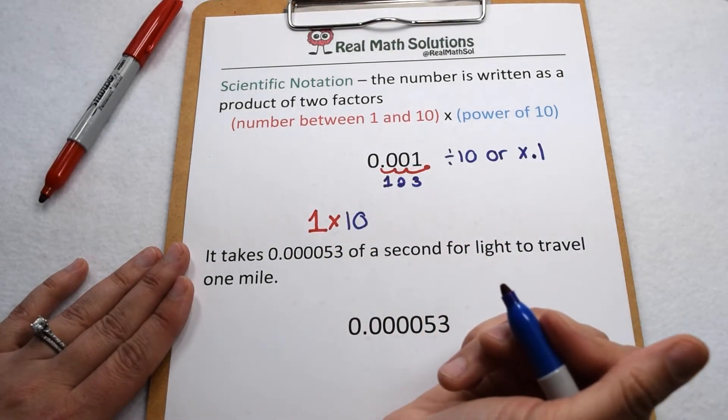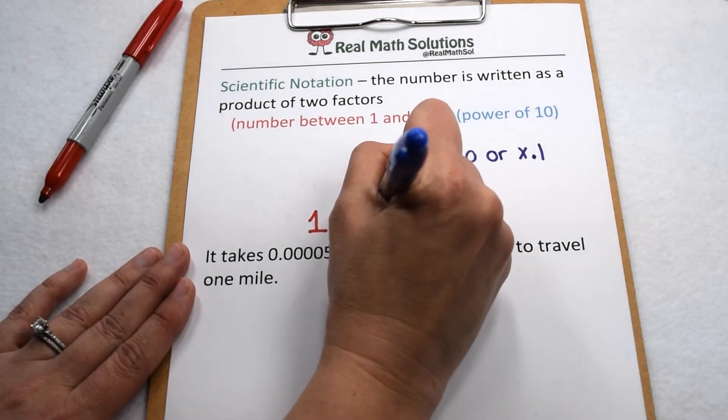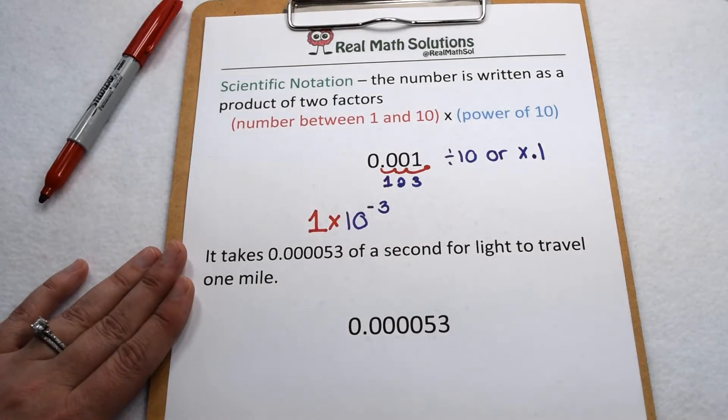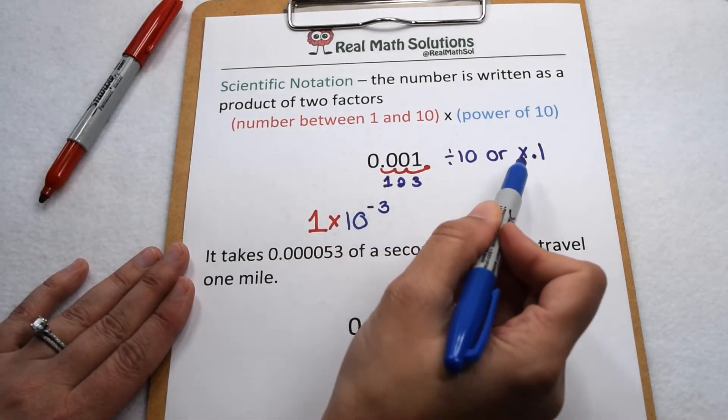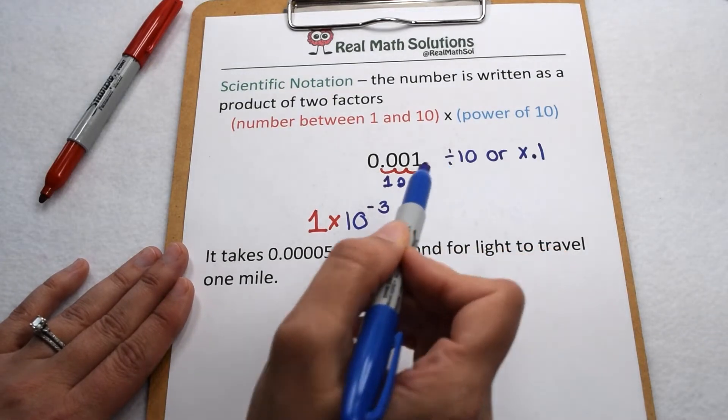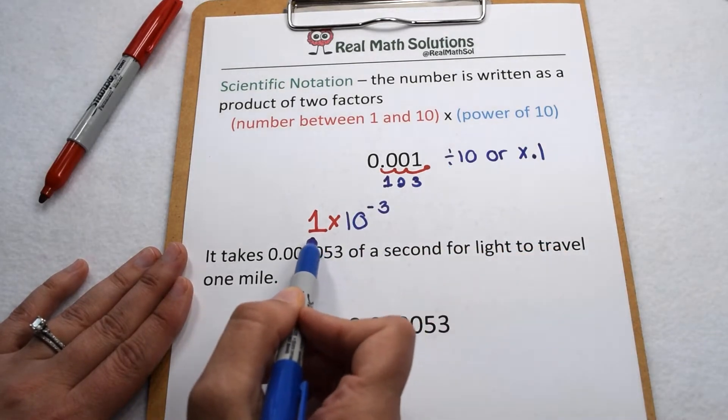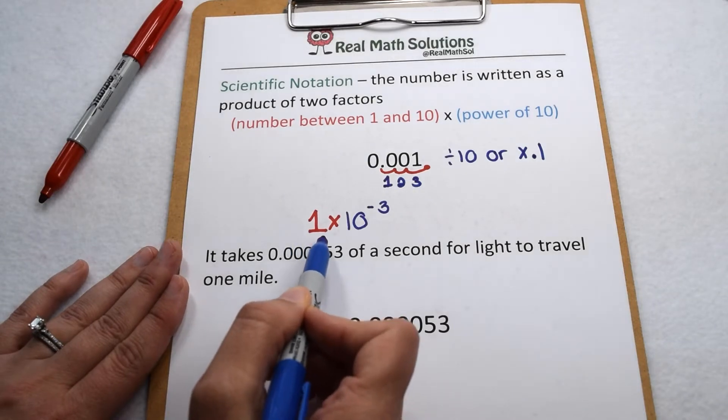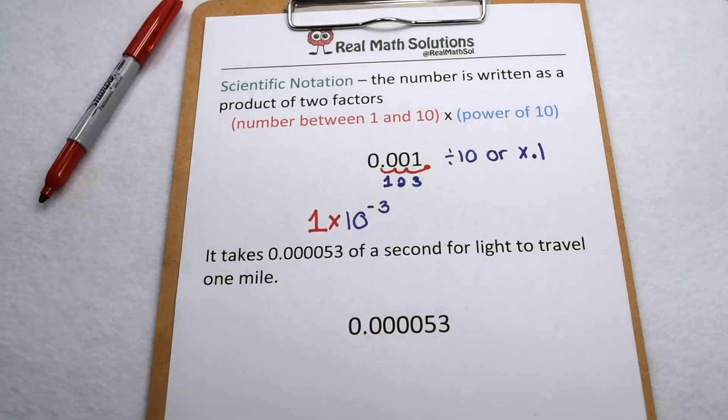So our exponent isn't simply going to be to the third power, it's going to be to the negative third power. That negative shows we're working with decimal values or that we're dividing by 10 instead of multiplying by it. So in scientific notation, 0.001 is going to be worth 1 times 10 to the negative third power.